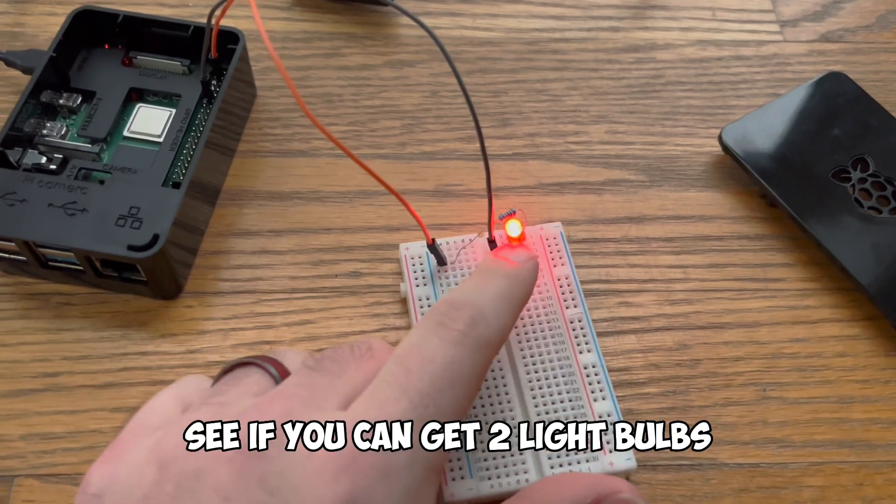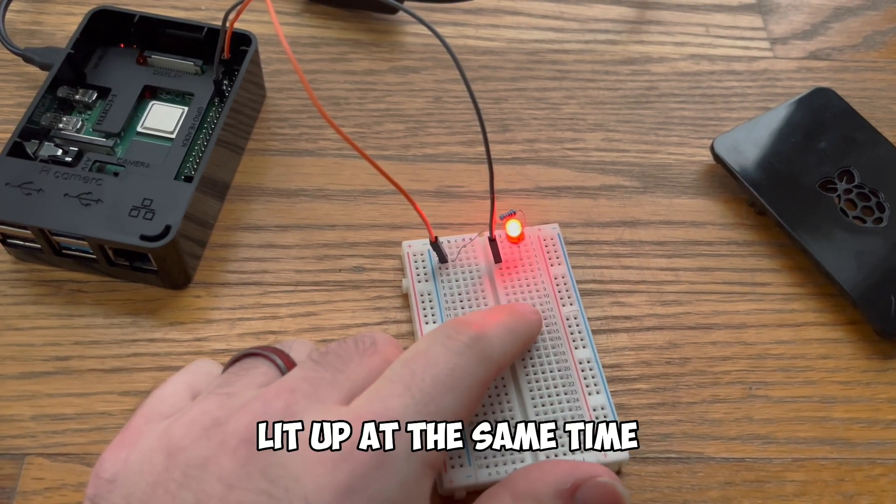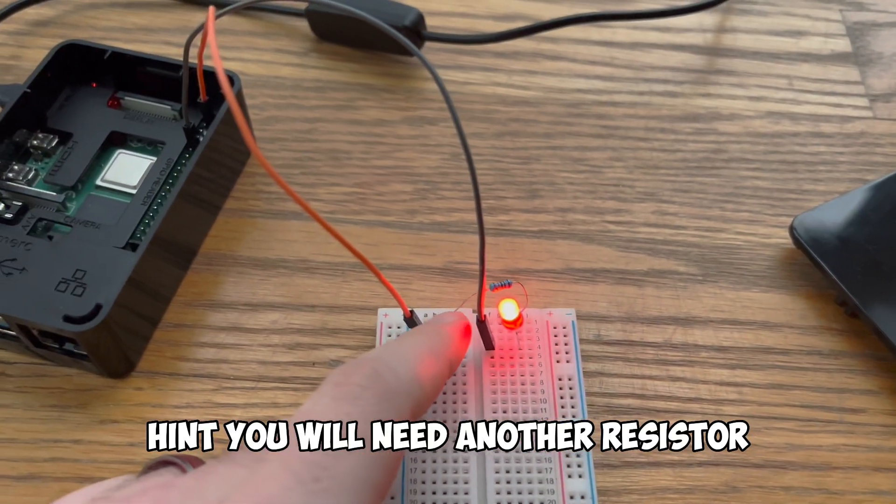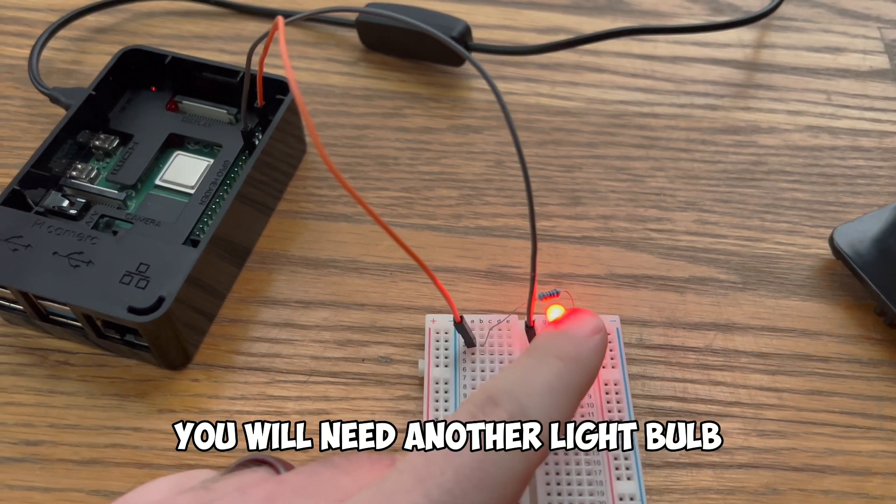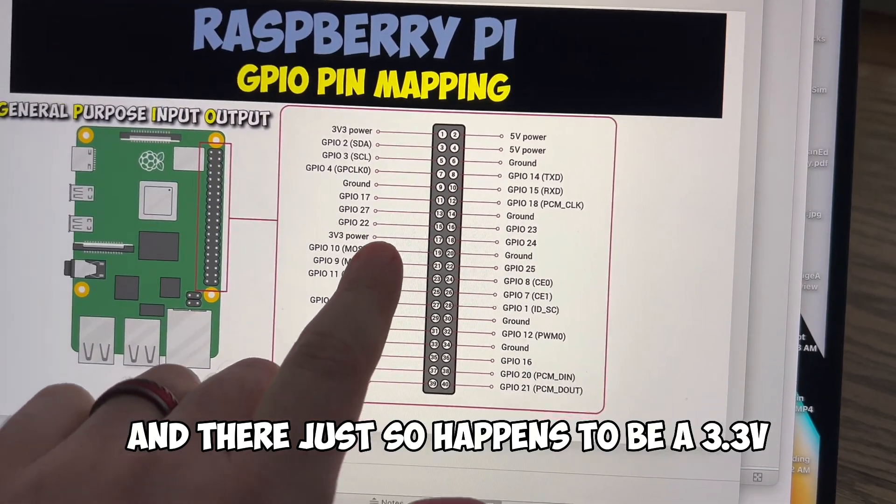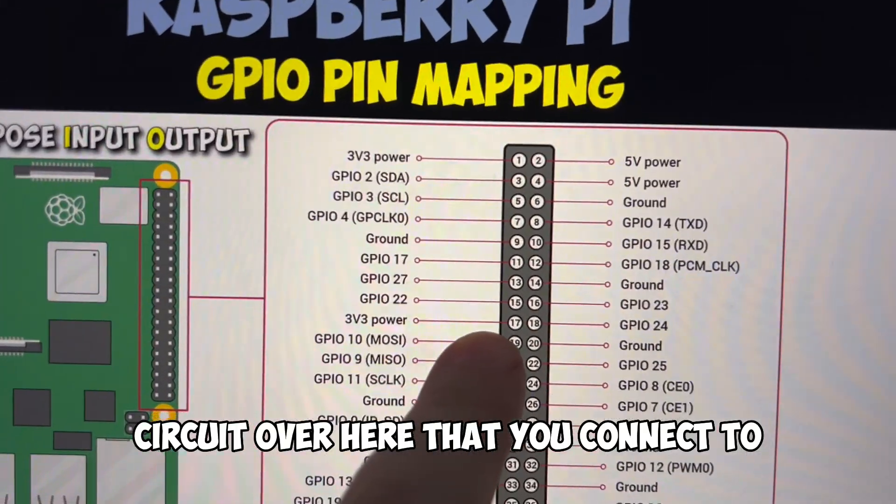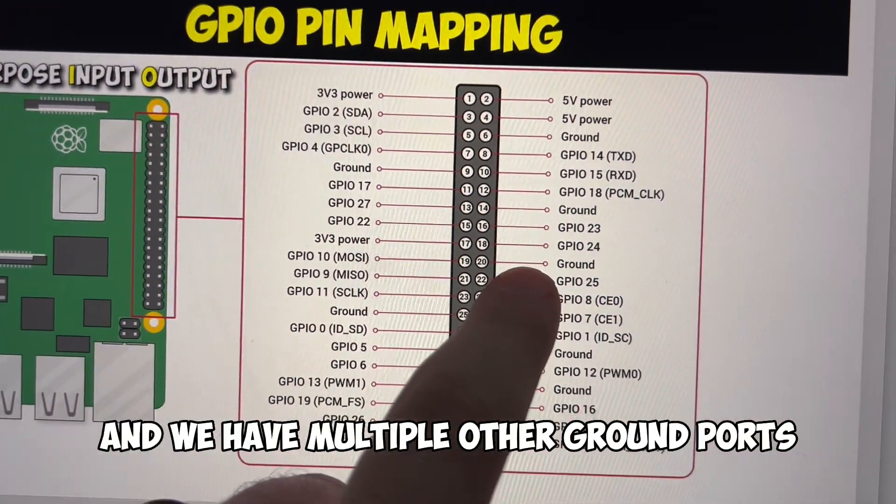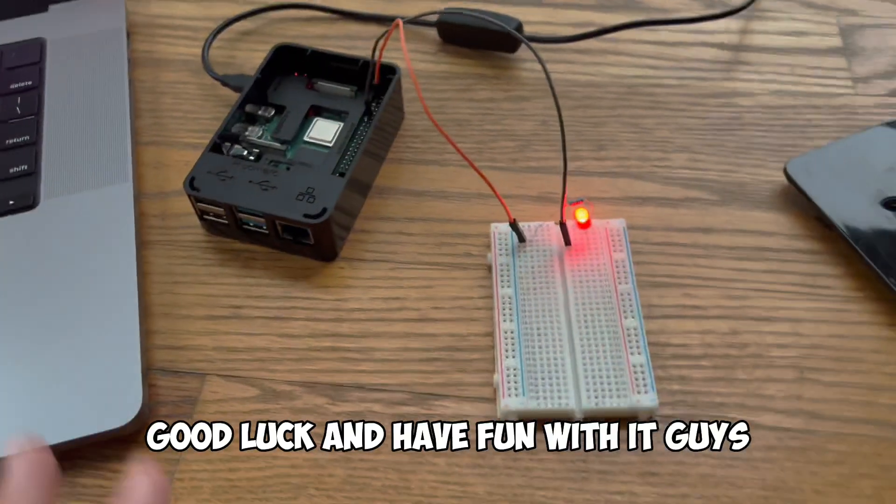And as a bonus challenge see if you can get two light bulbs lit up at the same time. Hint you will need another resistor. You will need another light bulb and two more wires. And there just so happens to be a 3.3 volt circuit over here that you connect to and we have multiple other ground ports. Good luck and have fun with it guys.